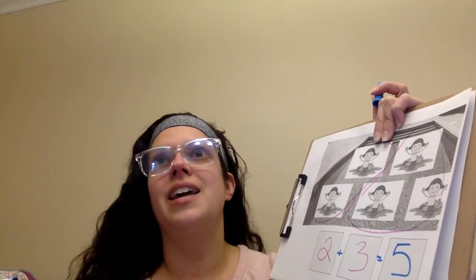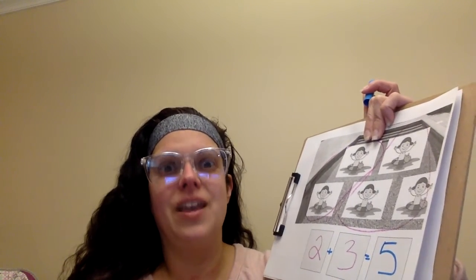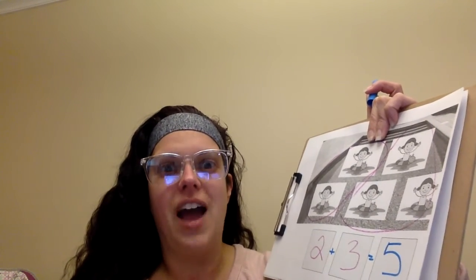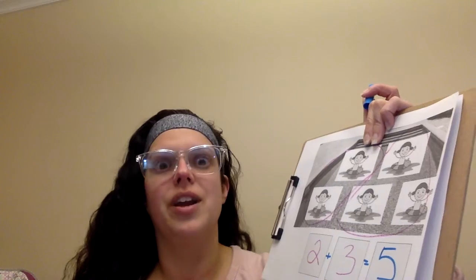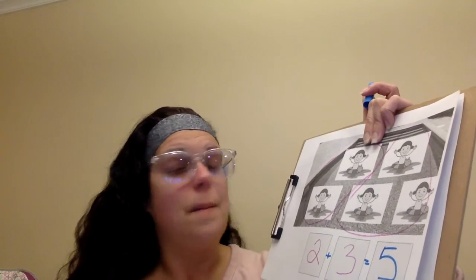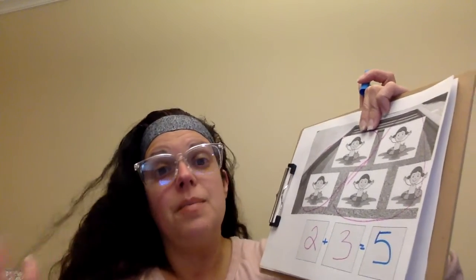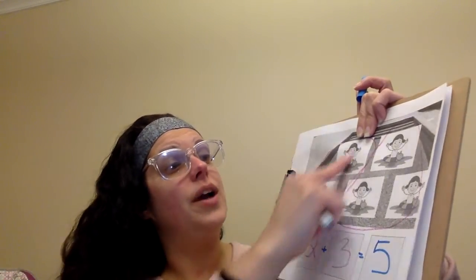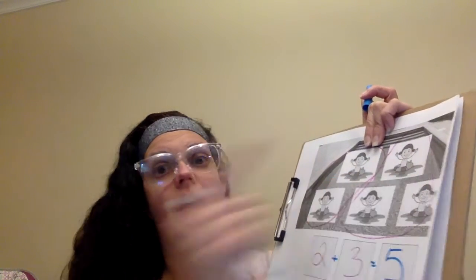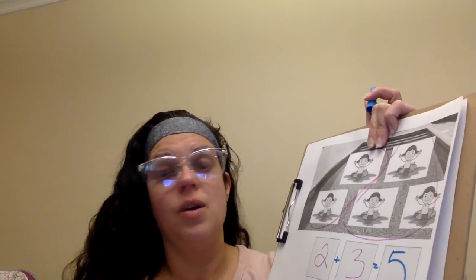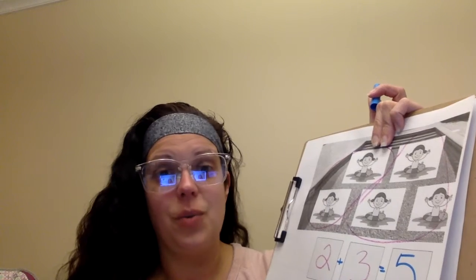So for me, that was like one of my easy, fast facts, because I remember two and three as five. Maybe you're going to say, oh, I started at two, and then I counted three, four, five. Or maybe you counted a different way.